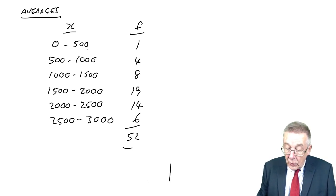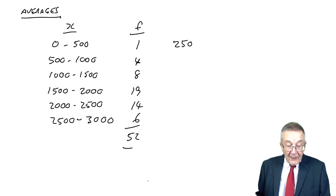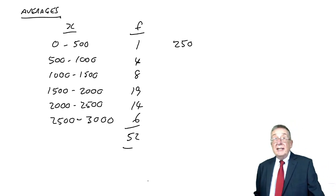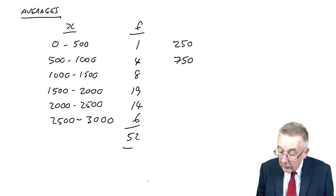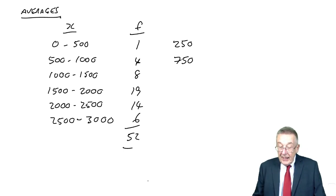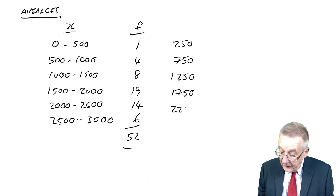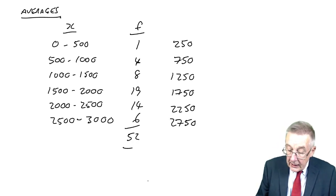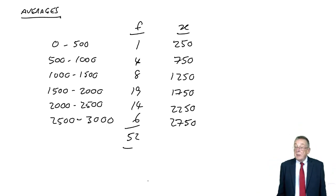So what I mean is, 0 to 500, we take the midpoint and treat it as though it was 250. 500 to 1000, the midpoint is 750. Similarly, 1000 to 1500, the midpoint is 1250, then 1750, 2250, 2750. So we replace the range by the midpoint.